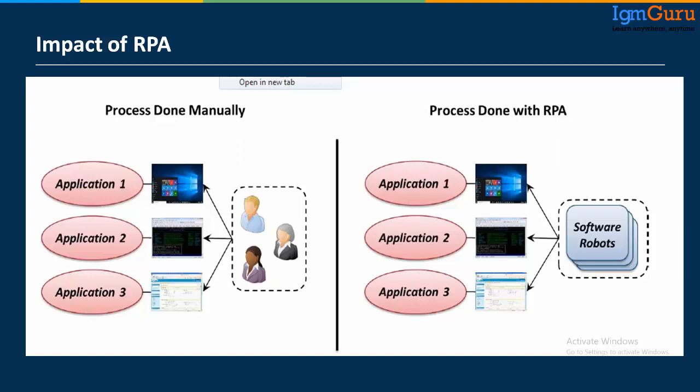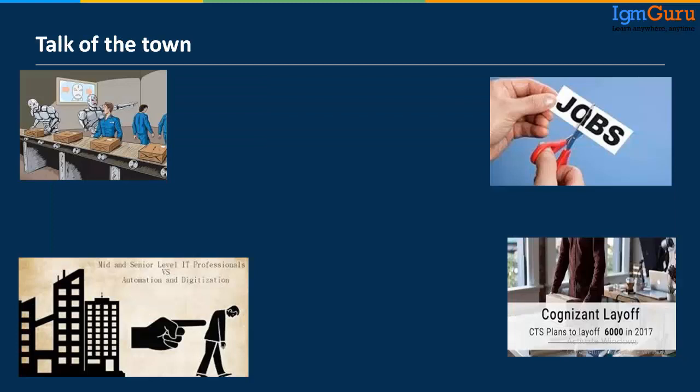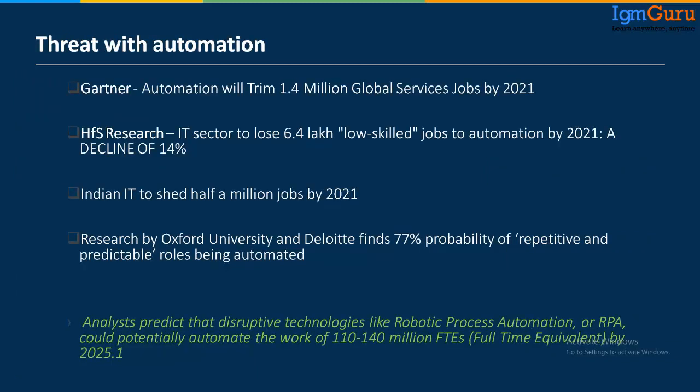This is all about RPA — what it is and its characteristics. This is the talk of the town. If you heard about the Infosys layoffs or Cognizant layoffs, yes, this is a fact. Why would you require a manual tester or tech support person doing the same thing every day, or a KPO, operations, or inventory person? These are low-skill jobs. Research shows there will be 6.4 lakh low-skill jobs eliminated by 2021 because of RPA — my bot will take care of everything.